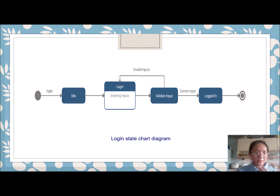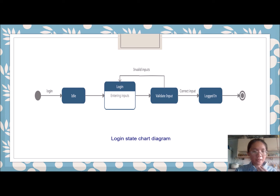The figure shows the login state chart diagram. In the login state, users should enter their email and password to log into the system. After the user enters their inputs, the system will validate the inputs. If it is an invalid input, the user will be redirected to the login state to re-enter their inputs. If the inputs are valid, the user will be logged into the system.